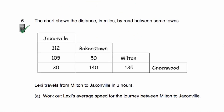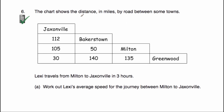Question number six — this is our last question. The chart shows the distances in miles by road between some towns. We've got Jacksonville, Bakerstown, Milton and Greenwood. Lexi travels from Milton to Jacksonville — that is 105 miles — and this is a calculator question. She travels that distance in three hours.